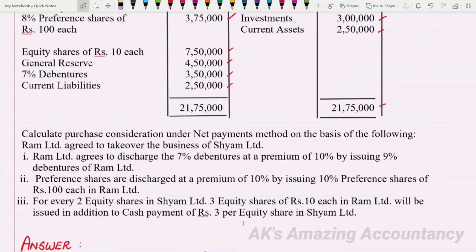As I told you earlier, payment made in the form of debentures should not be taken into consideration while calculating the purchase price as per the Net Payment Method. So point number 1 — which states that Ram Limited agrees to discharge the 7% debentures at a premium of 10% by issuing 9% debentures of Ram Limited — need not be taken into account. We have to consider only point number 2 and point number 3 for the purpose of calculating purchase consideration.